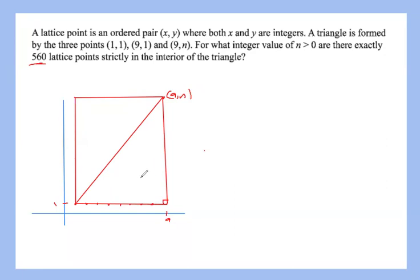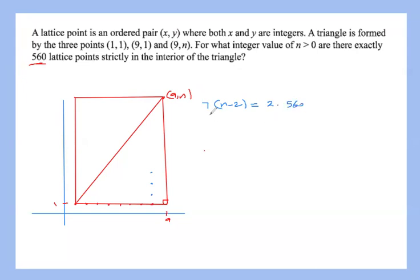To count lattice points inside the rectangle, consider one column, say x=8: the points go from (8,2) up to (8, n−1), giving n−2 lattice points per column. We have seven such columns (x=2 through x=8), so the rectangle contains 7(n−2) interior lattice points. Dividing by two for the triangle gives 560, so 7(n−2) = 1120, meaning n−2 = 160, and n = 162.